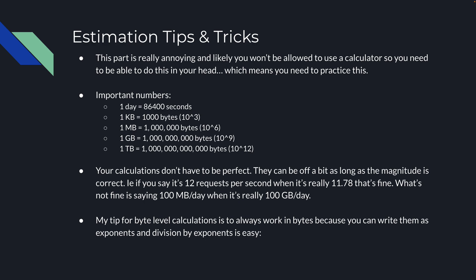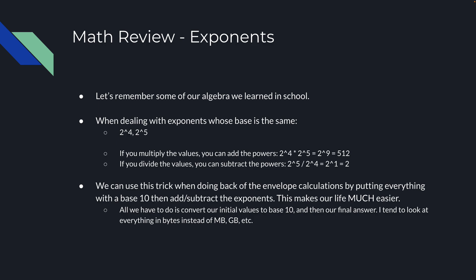My tip for byte-level calculations is to always work in bytes expressed as powers of 10, because division and multiplication by exponents is really easy. When dealing with exponents of the same base, you can simply add the powers when multiplying — 2⁴ × 2⁵ = 2⁹ = 512 — and subtract the powers when dividing — 2⁵ ÷ 2⁴ = 2¹ = 2. You can use this trick by converting everything to base 10 and then simply adding or subtracting exponents, which makes the arithmetic much easier.